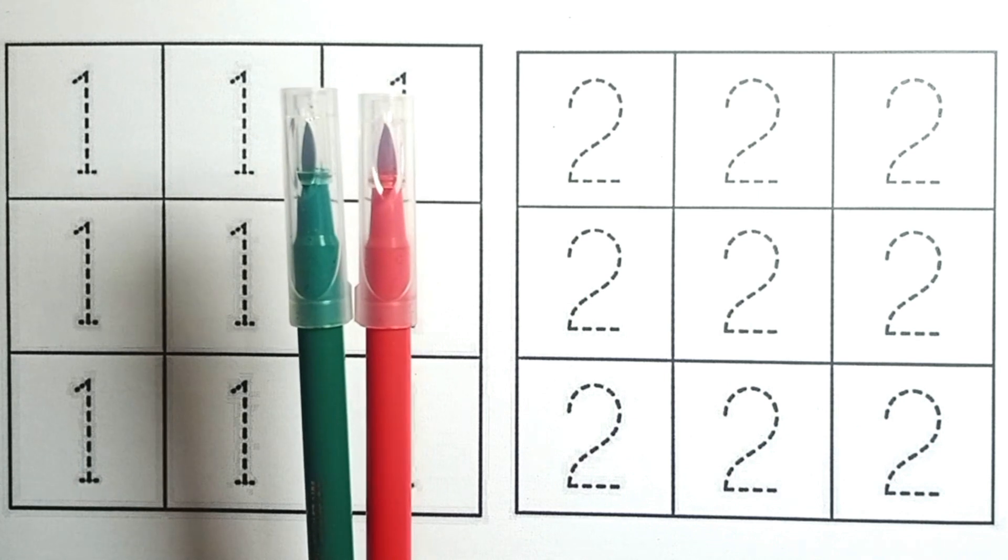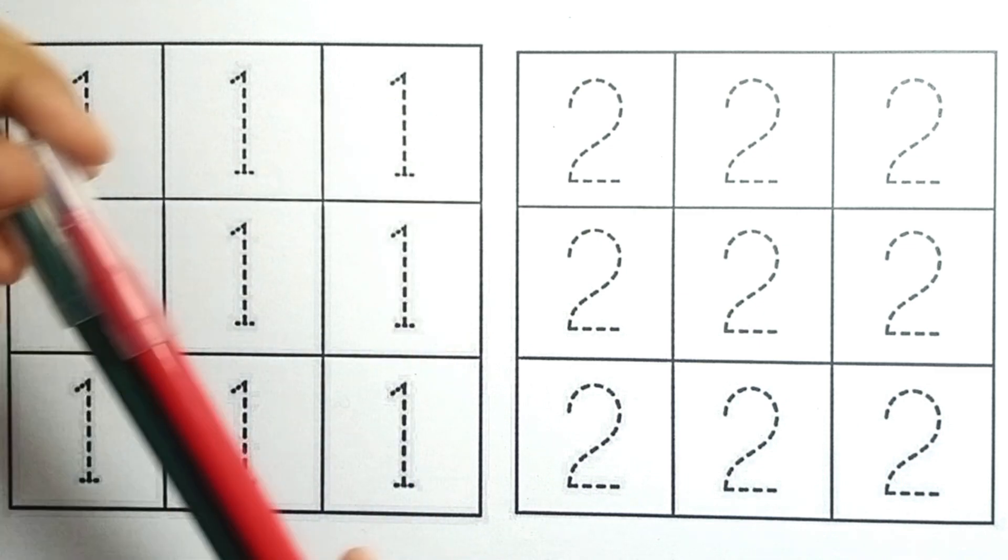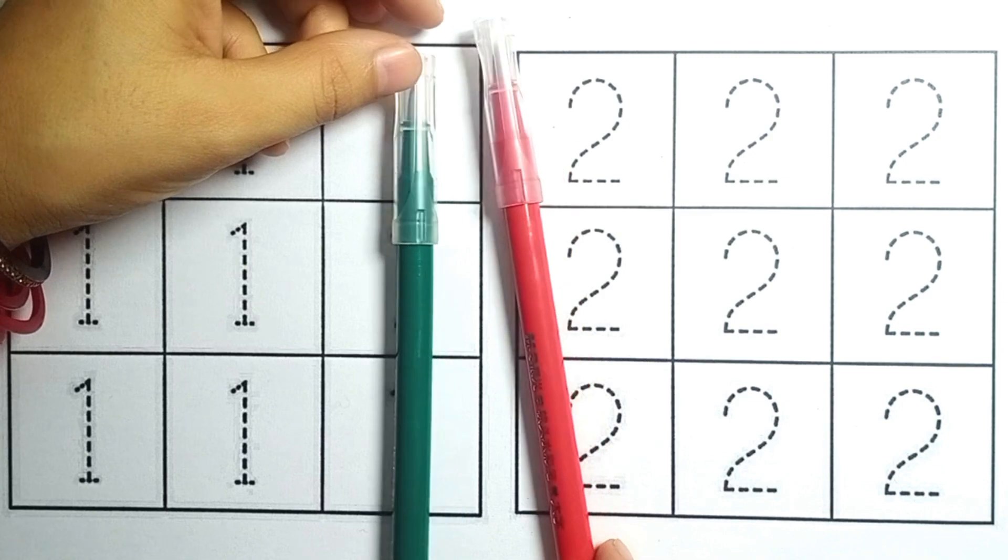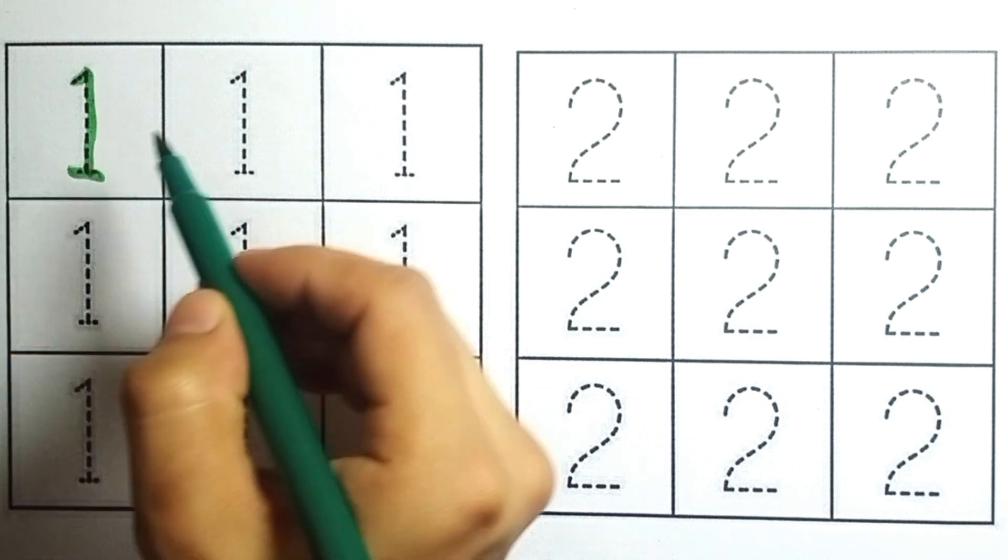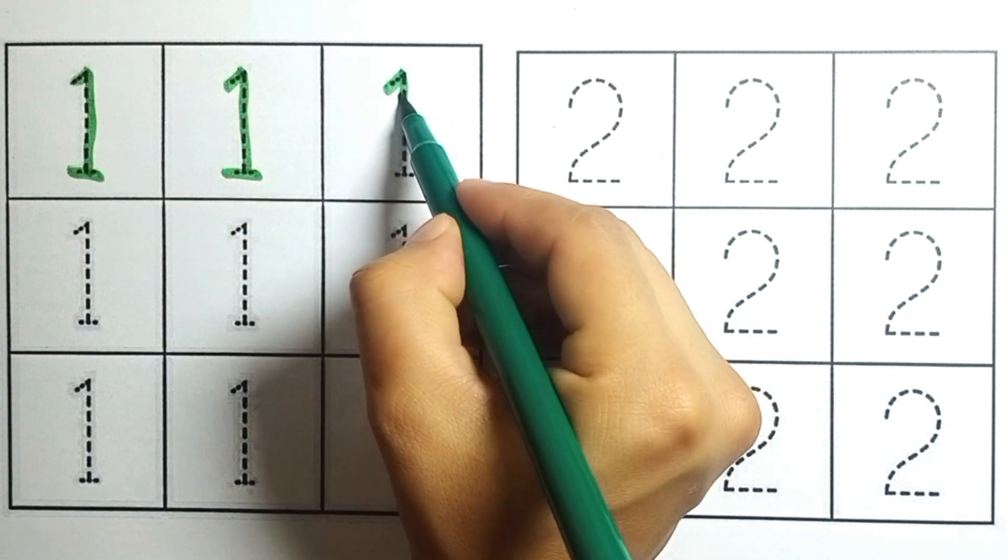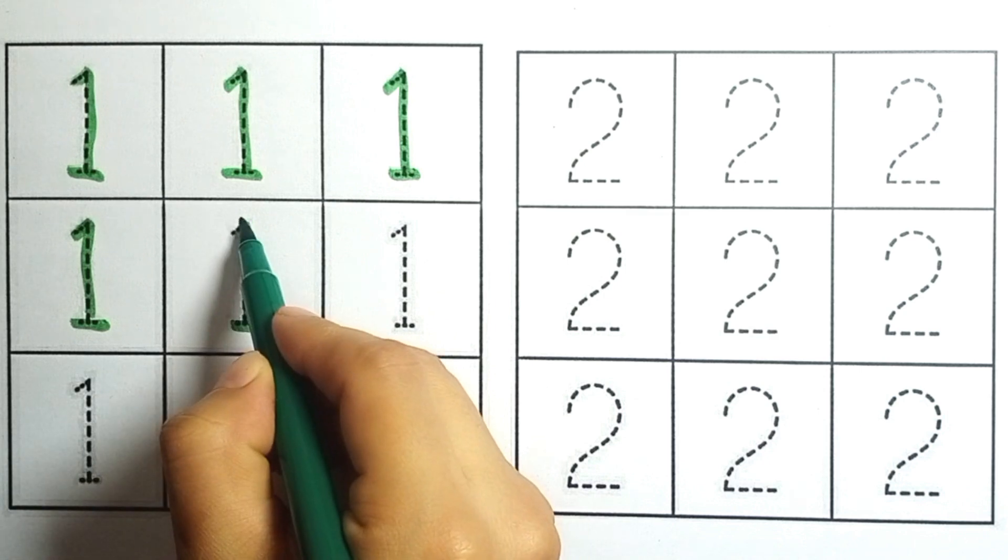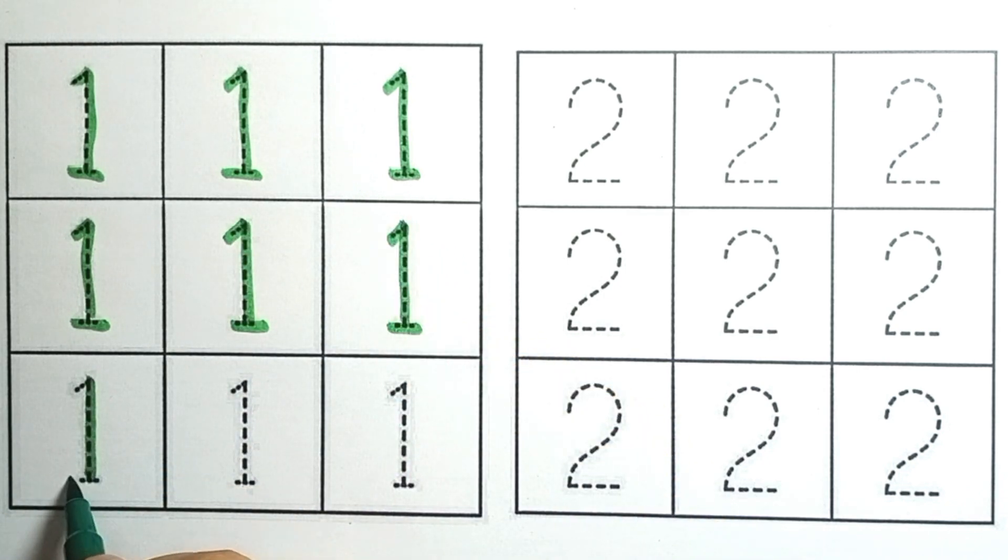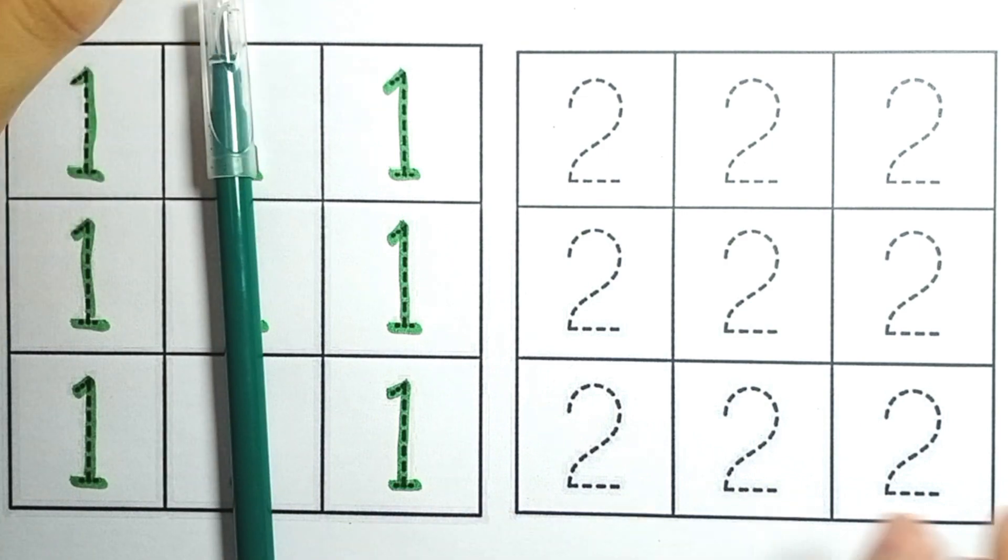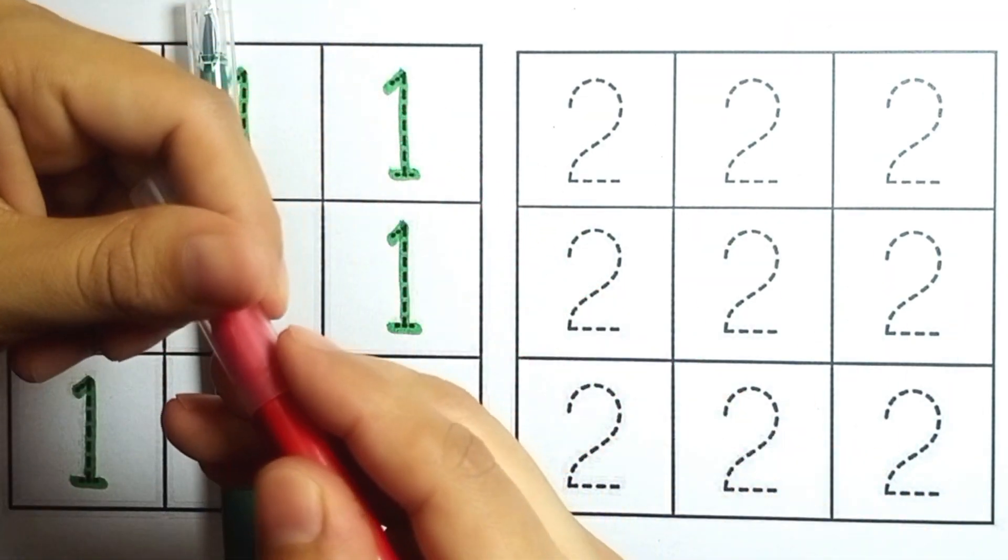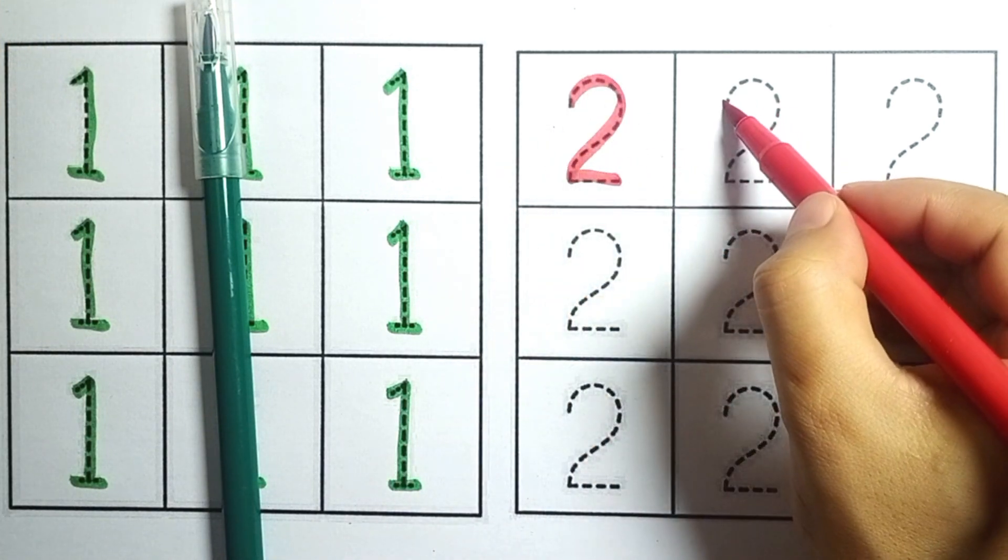Hello viewers, how are you? Today we learn 1 to 10 numbers. We have two colors: dark green and red color. Dark green color one, one. Red color two, two.